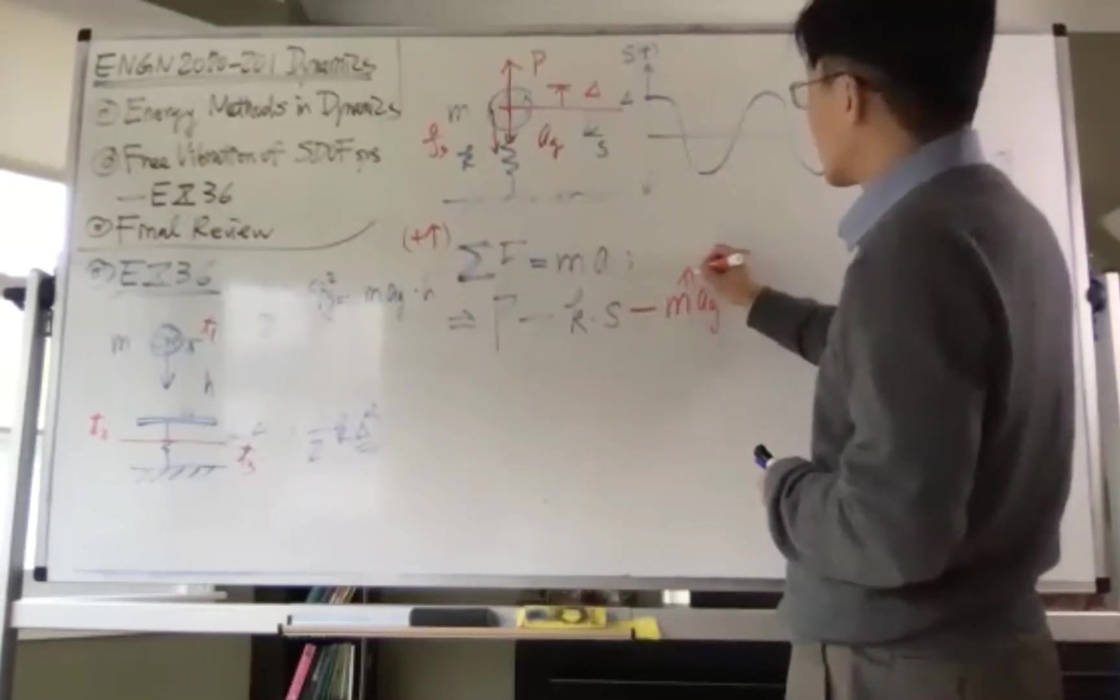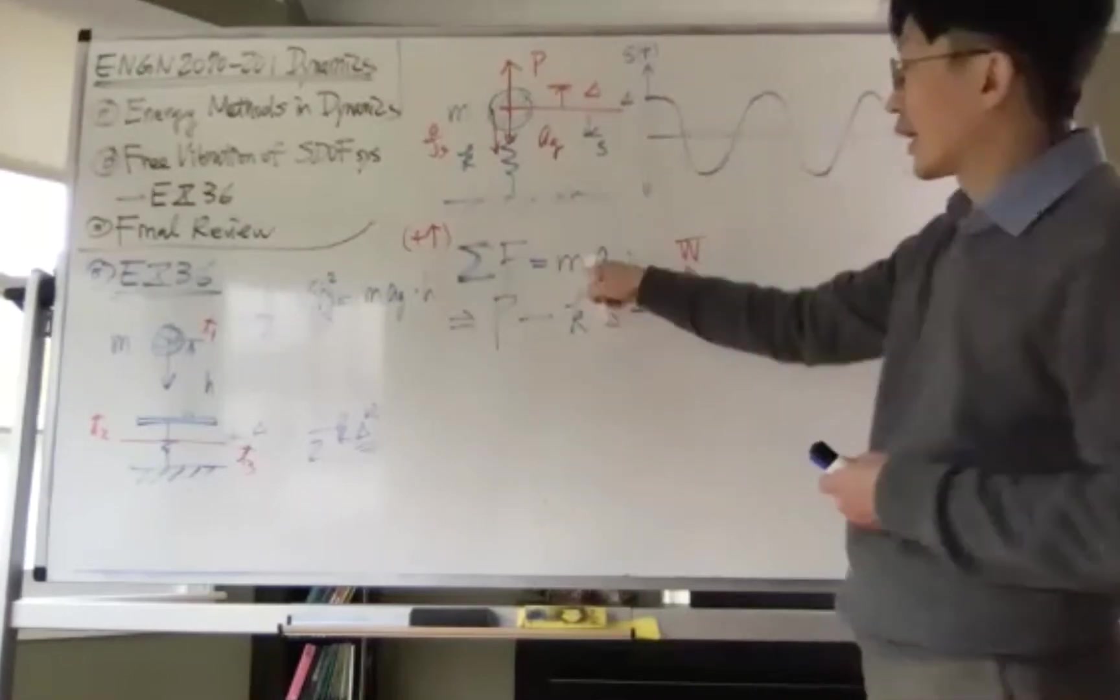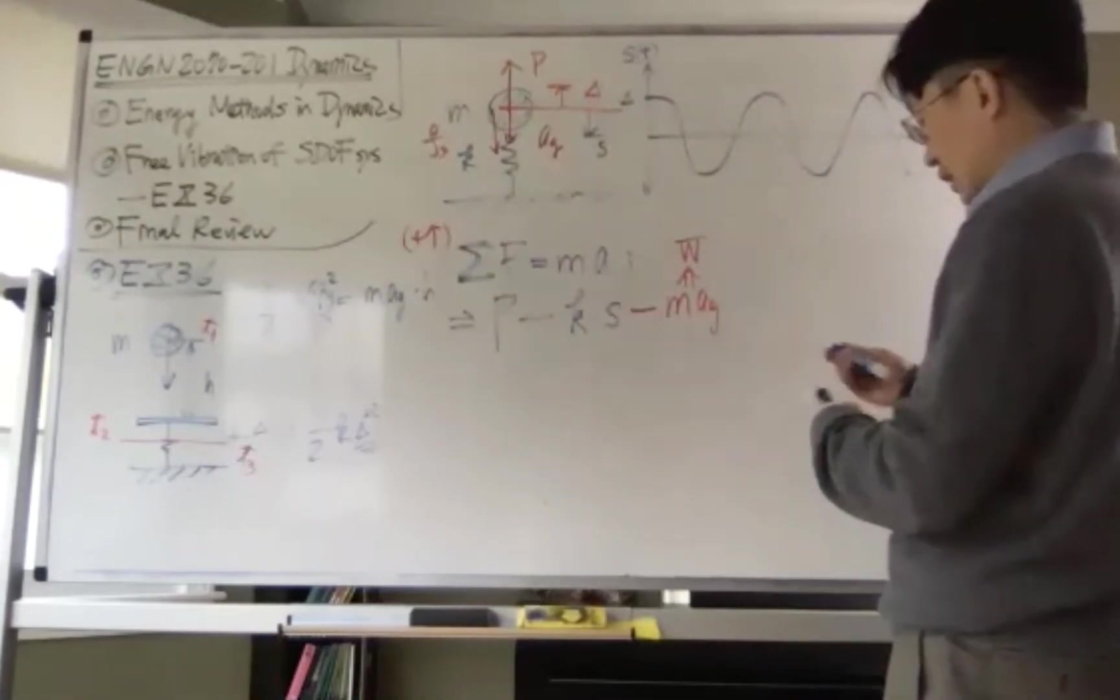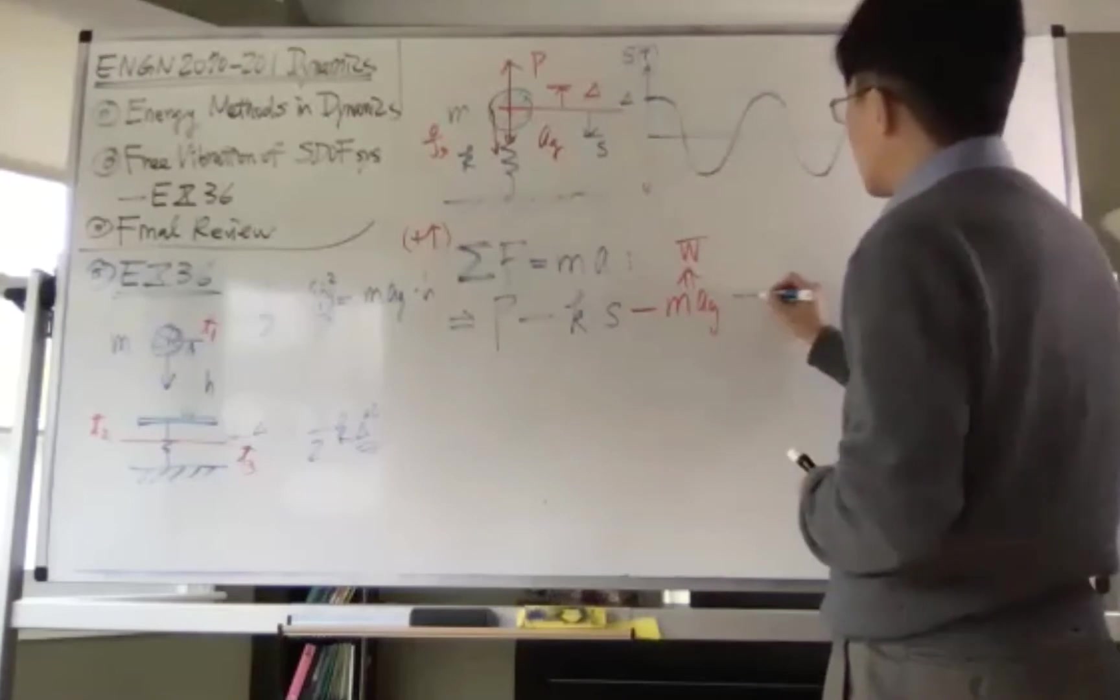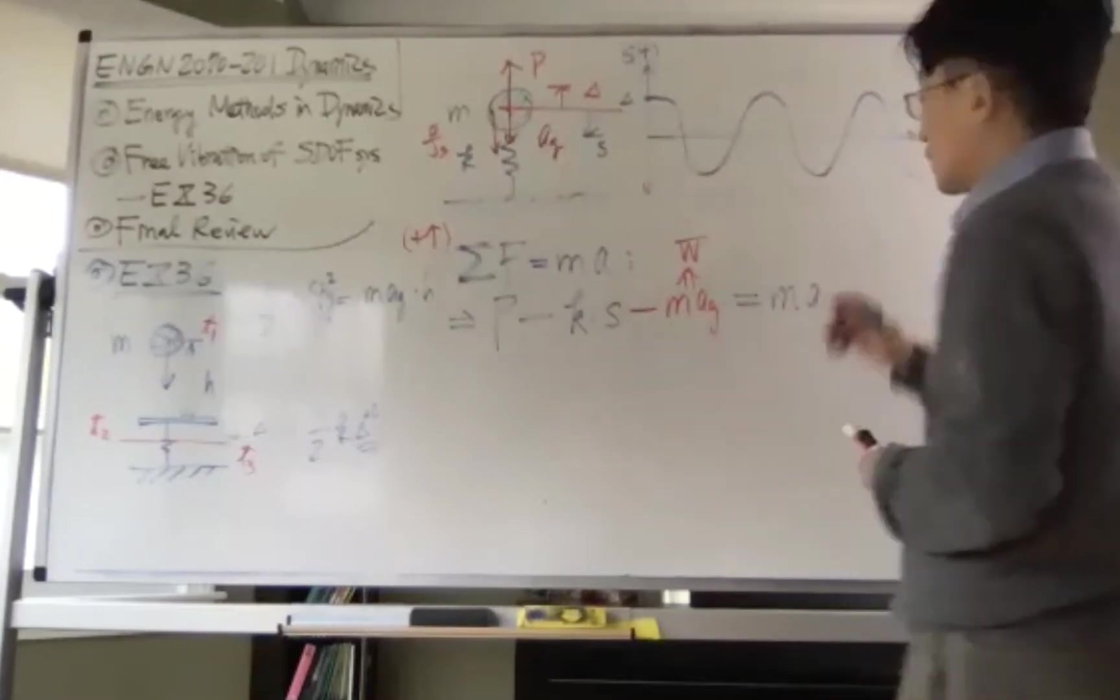And remember, this is just W, the weight. It's constant. It's not MA. Now the whole thing equals to what? Equals to mass times acceleration. So this is our governing equation.